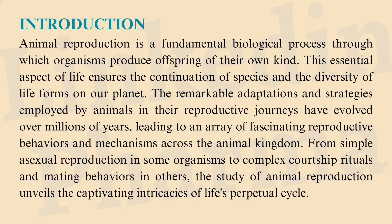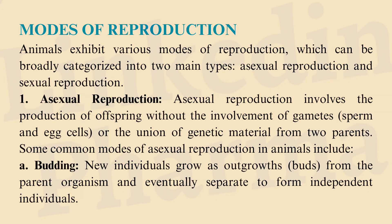Modes of Reproduction: Animals exhibit various modes of reproduction, which can be broadly categorized into two main types: asexual reproduction and sexual reproduction.